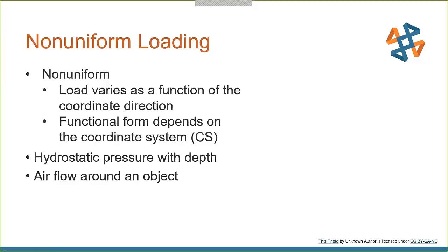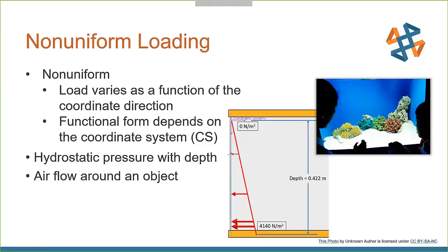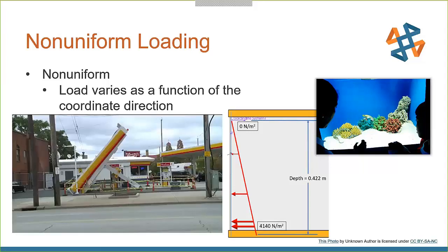One very prevalent example is hydrostatic pressure, like a fish tank or a dam like the Hoover Dam. As water fills up, the pressure on the bottom is higher than at the top where it is zero, and we need to supply an equation to capture that increase. Other examples include airflow around objects — a golf ball, baseball, football, or aircraft — and also wind loading, which can push items and varies over the geometry. We're going to look at what wind loading can do on objects and how we can model it inside SolidWorks.